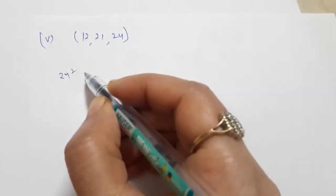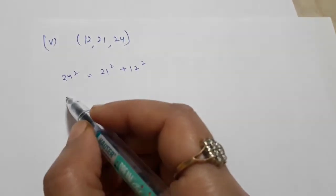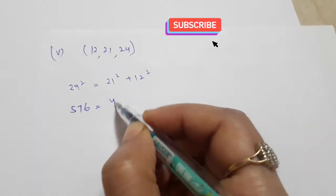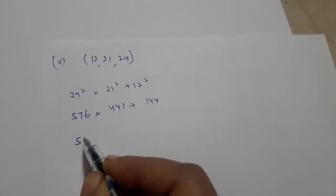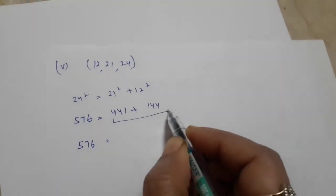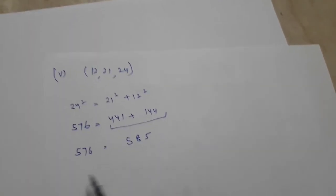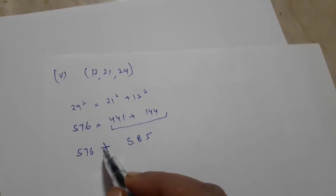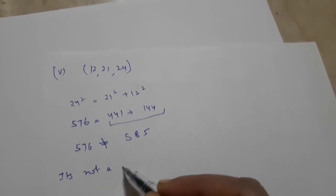In the fifth part, we check whether 24² equals 21² + 12². 24² = 576, 21² = 441, and 12² = 144. The addition of 441 and 144 is 585, which is not equal to 576. So LHS does not equal RHS, and it's not a Pythagorean triplet.